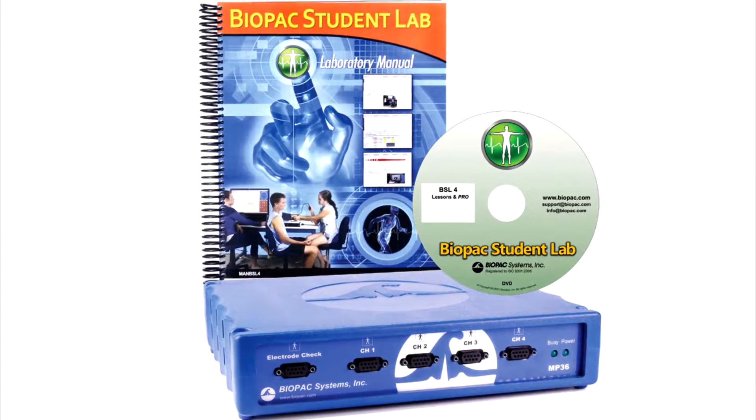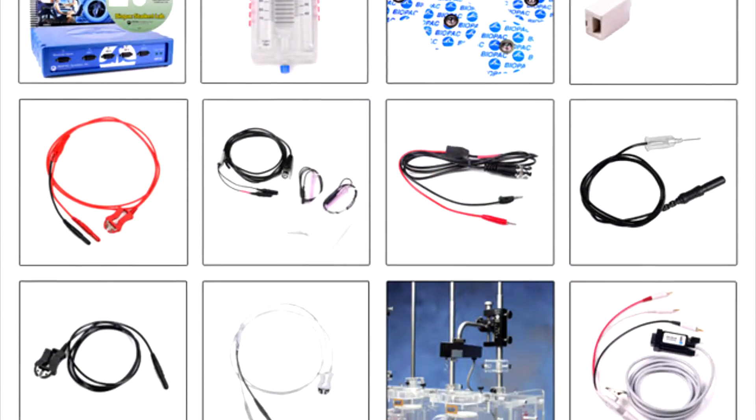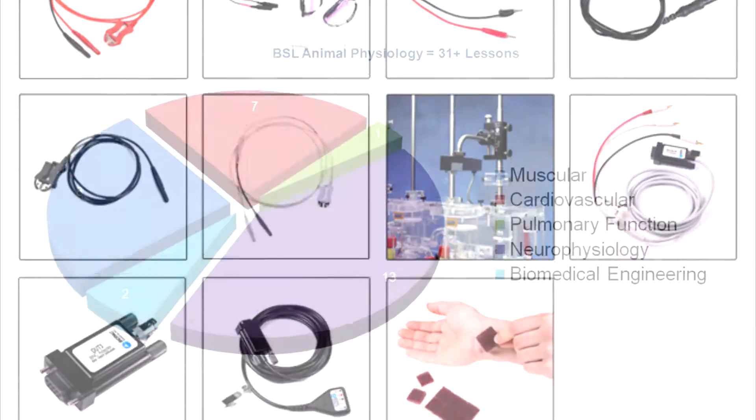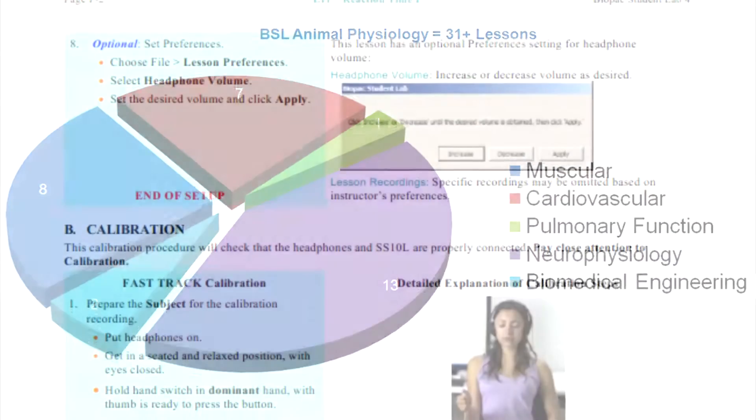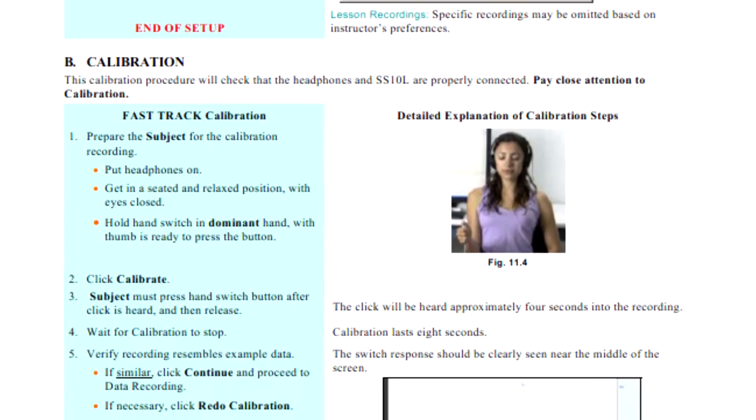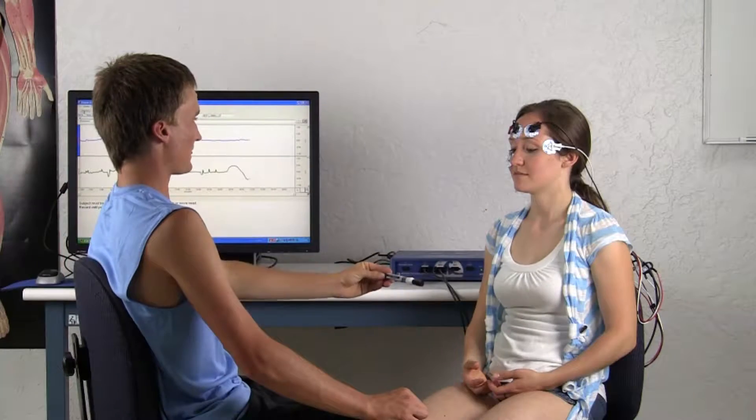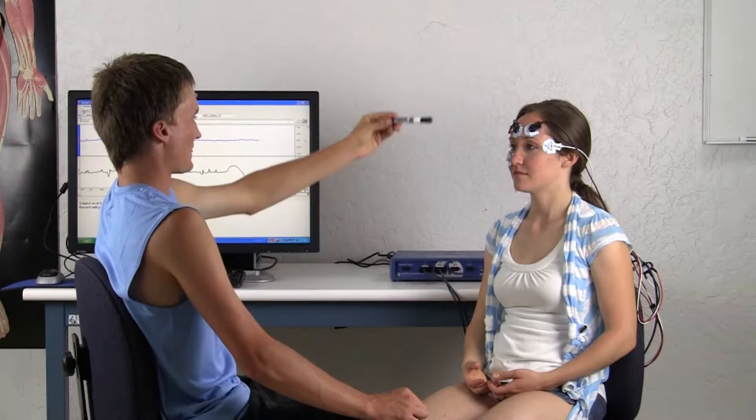This overview details the components included in the BSL animal physiology system. With over 31 targeted lessons from the BSL laboratory manual and BSL pro lessons, this package includes everything needed to support additional active learning segments in those lessons or student design experiments.